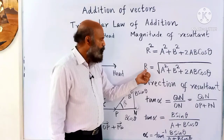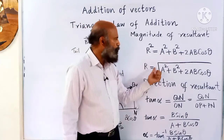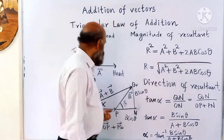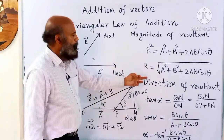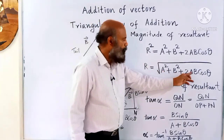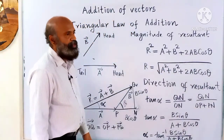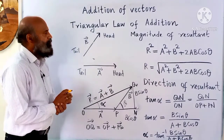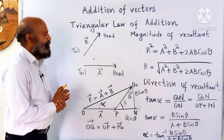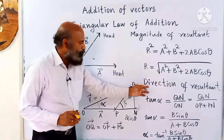Taking the square root gives the magnitude of the resultant: the magnitude of the resultant equals the square root of a squared plus b squared plus 2ab cos theta. Now let us find the direction of the resultant.